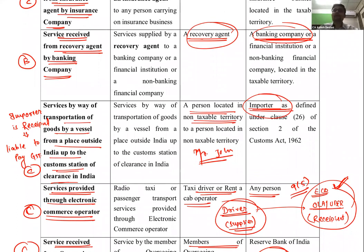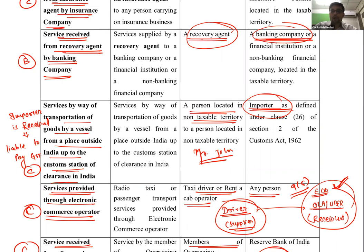आठवीं service — recovery agent of a banking company। बहुत सारे लोग bank से loan लेकर repay नहीं करते, तो bank recovery agents को appoint करती है। Recovery agents bank को service दे रहे हैं और bank उन्हें पैसे देती है। Government ने bank को पकड़ा और बोला कि bank को GST भरना पड़ेगा। Recovery agents से GST वसूल नहीं करेंगे।